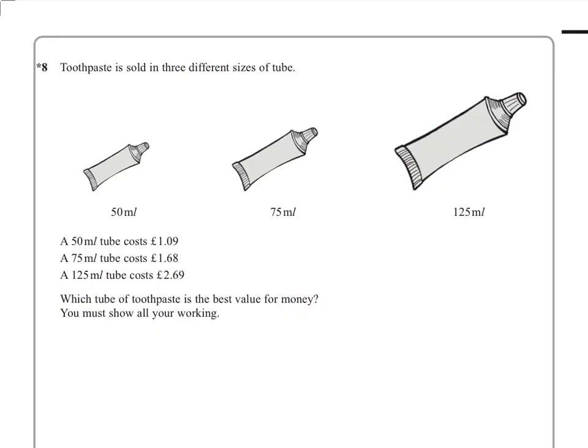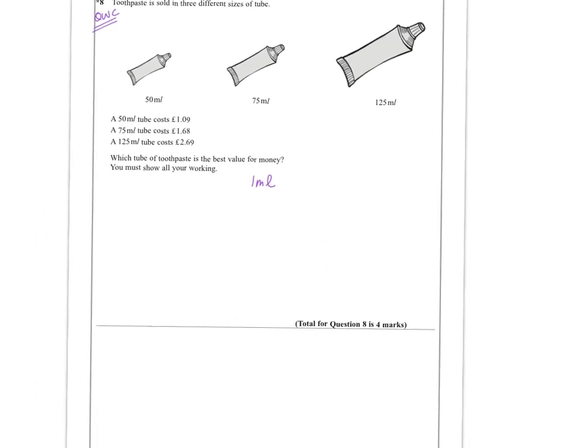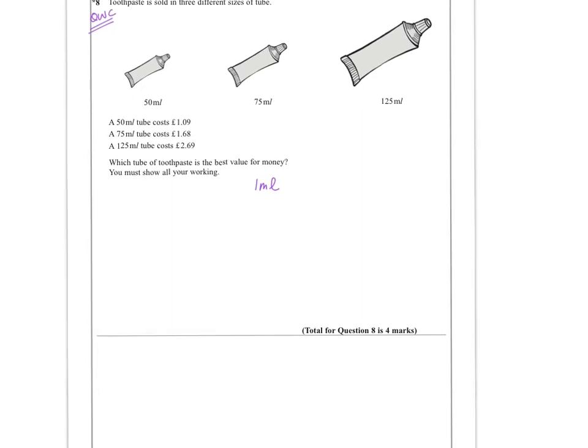Question eight. And again, a quality of written communication. And it's about comparing the costs of three different types of toothpaste, or the same type of toothpaste but sold in three different sizes. And you've got to work out which is the best value for money. Now for this type of problem, I would definitely do the following. I would always look for what one milliliter was worth. So let's try that.